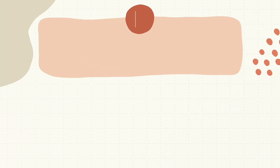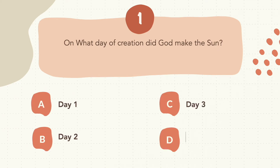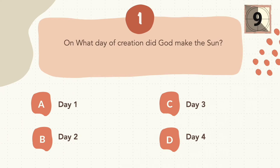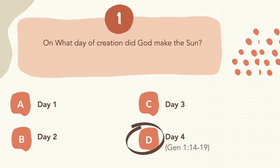Question 1: On what day of creation did God make the sun? The correct answer is D, day 4.